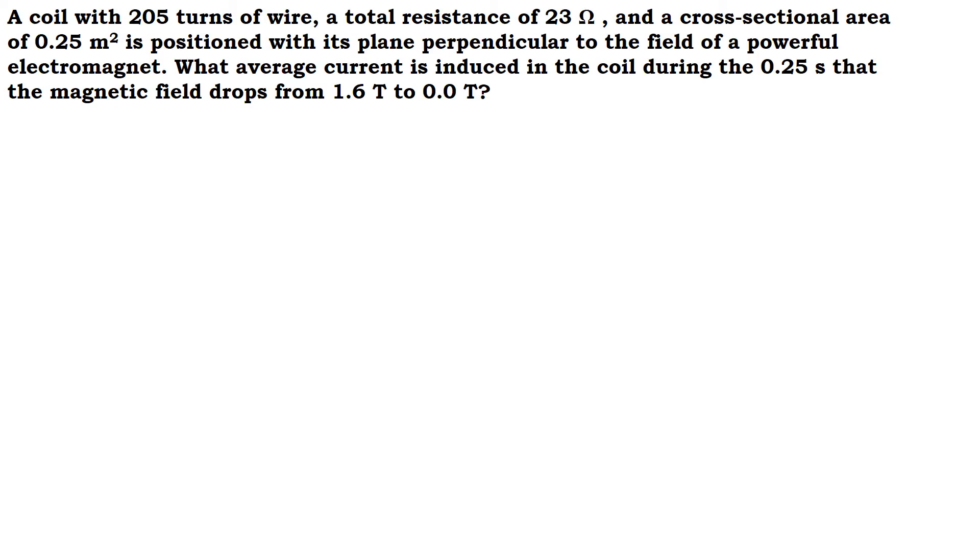A coil with 205 turns of wire, so the number of turns is 205. A total resistance, so the resistance of the coil is 23 ohms.